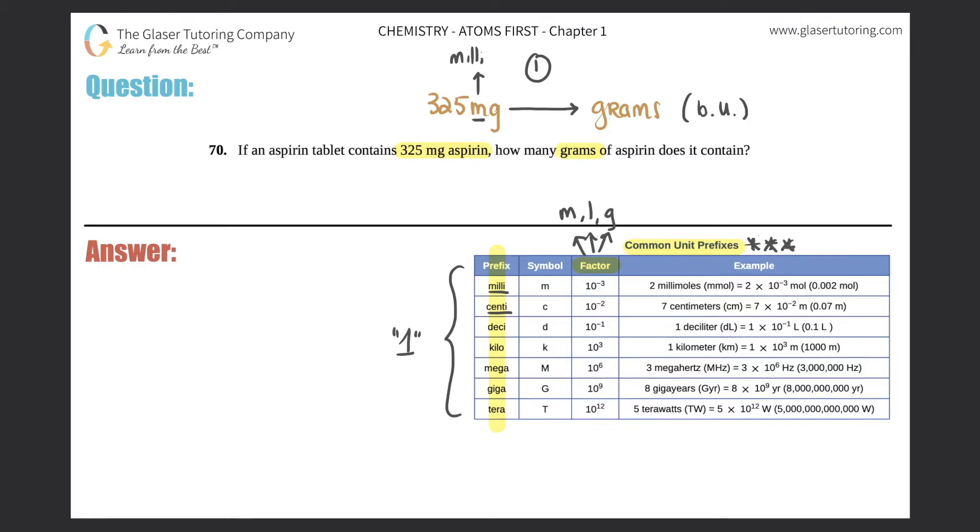All right, so let's get started. You start with what you're given, which is 325 milligrams. And when we convert, remember, we always multiply by a certain ratio, and we don't want milligram anymore. So that unit goes on the opposite side.